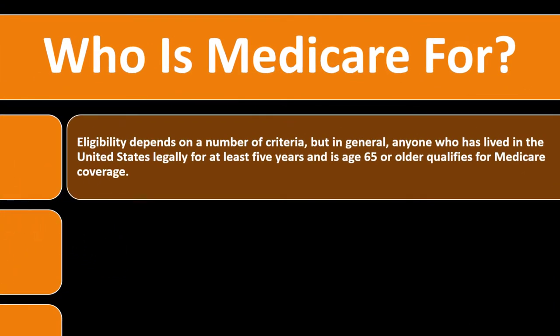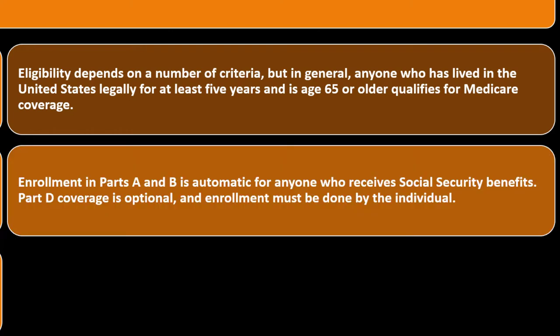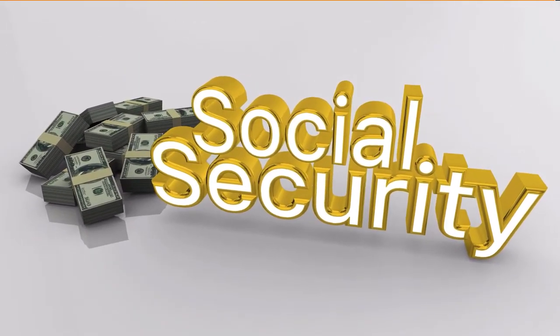So who is Medicare for? Eligibility depends on a number of criteria, but in general, anyone who has lived in the United States legally for at least five years and is age 65 or older qualifies for Medicare coverage. Enrollment in Parts A and B is automatic for anyone who receives Social Security benefits. Part D coverage is optional and enrollment must be done by the individual. If you paid payroll taxes through employment or self-employment, you would generally qualify.